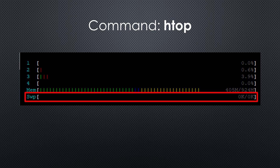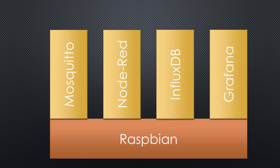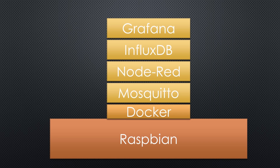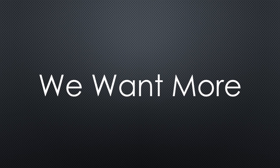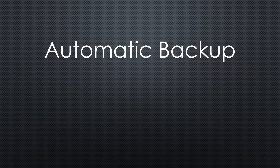Now our Raspberry is on a similar level as it was after applying Peter Scargill's script, only based on the modern container concept. In Graham's description, you find the commands to update the containers from time to time. This is the charm of Docker — you always get the newest version when you install them and you can easily update. But of course we want more — we still have two items on the list: automatic backup and remote access.